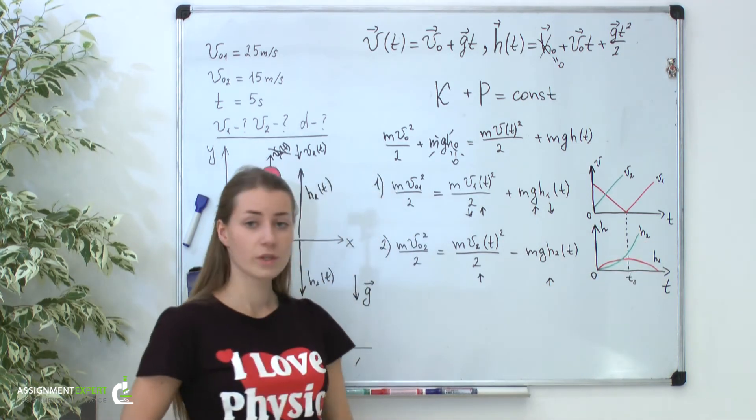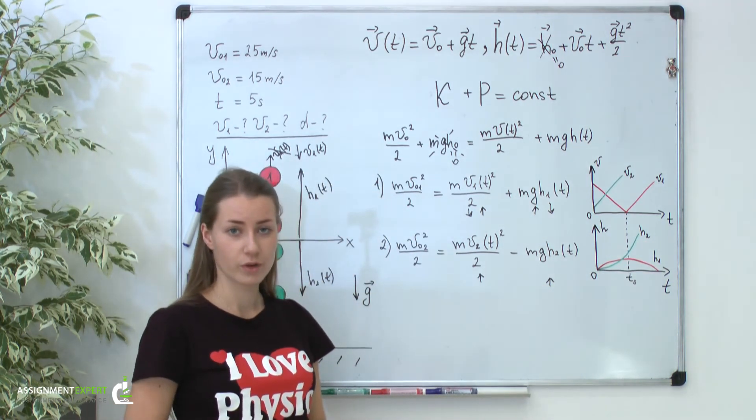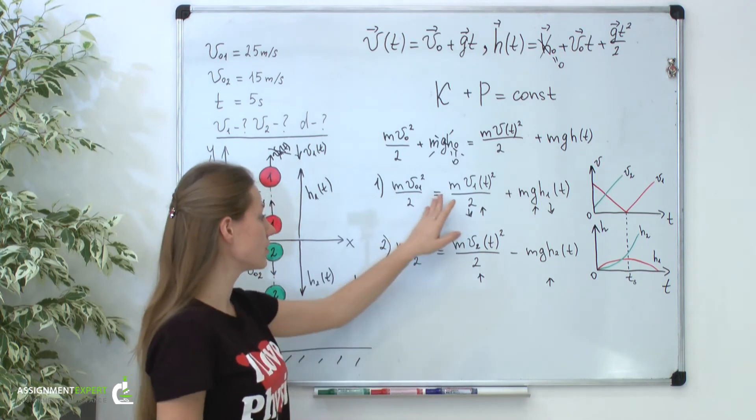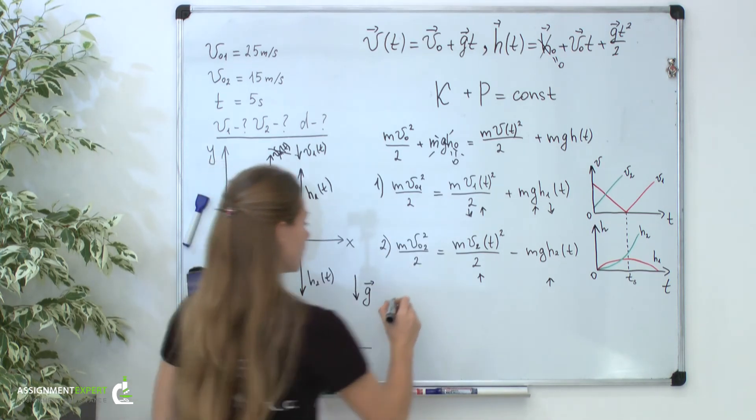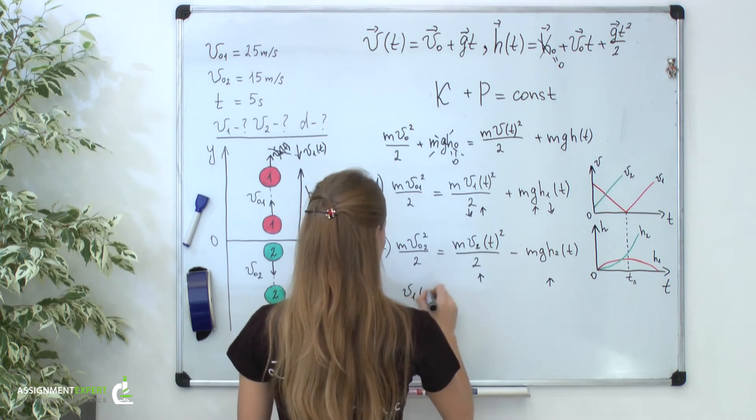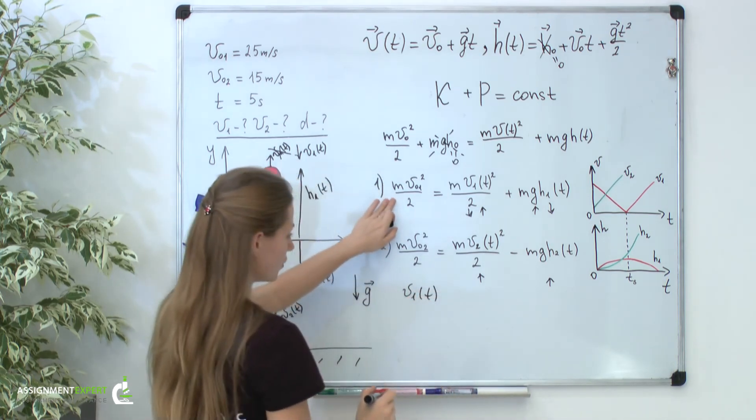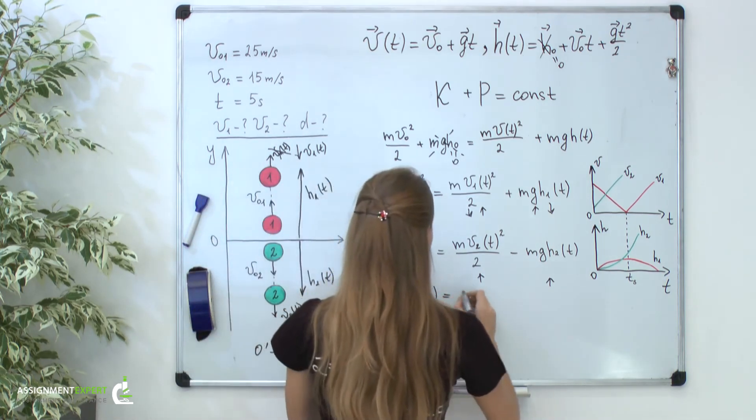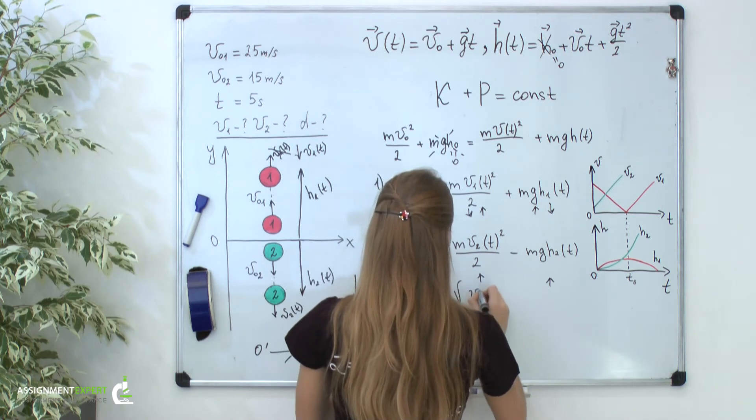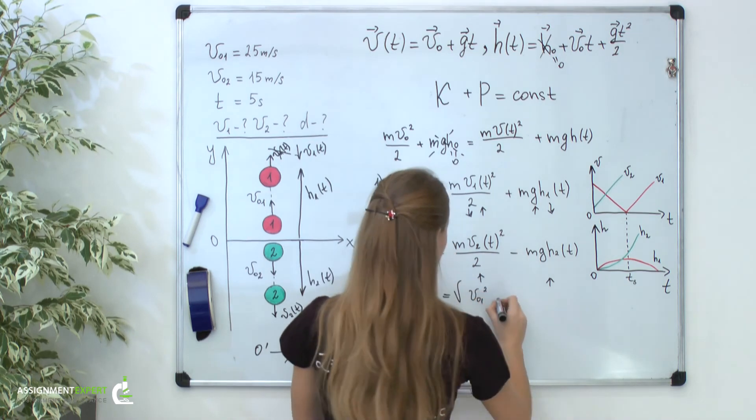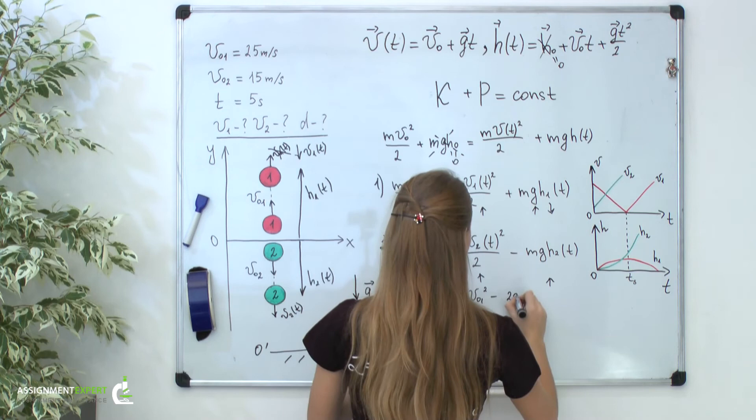To convince you that this method really works, let's find velocities from these two equations. The first velocity from this equation is equal to the square root of V01 squared minus 2GH1 of t.